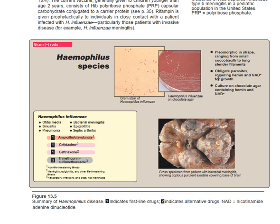Haemophilus influenzae requires hemin and NAD-plus for growth. It is cultured on chocolate agar, which contains hemin and NAD — nicotine adenine dinucleotide. This is the culture medium for Haemophilus influenzae. This shows the pattern of growth on chocolate agar, how it grows and the color of the colonies.